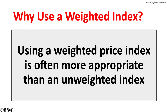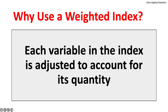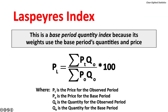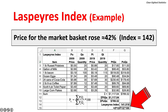Using a weighted index is often more appropriate than an unweighted index because each variable is adjusted to account for its quantity. Two German economists are the big names in weighted indices: Etienne Laspeyres and Hermann Paasche. The Laspeyres Index is a base period quantity index because its weights use the base period's quantities and prices. The formula is the sum of the price for the observed period times the base period quantities, over the sum of the base period prices times the base period quantities, times 100. Using a market basket of items from 2009 and 2019, the index is 142, rounded up from 141.52, meaning prices rose approximately 42%.